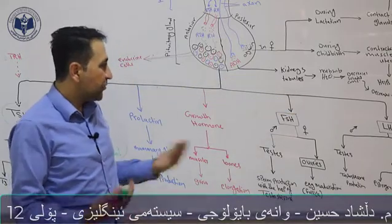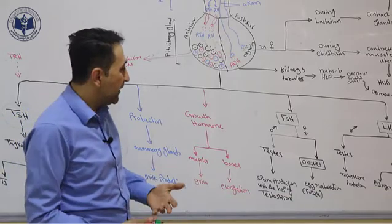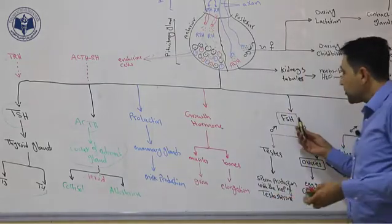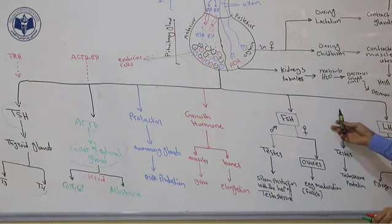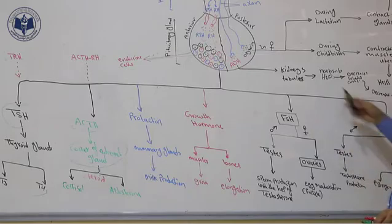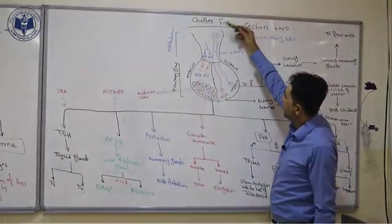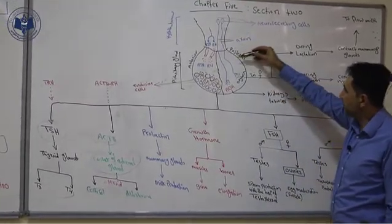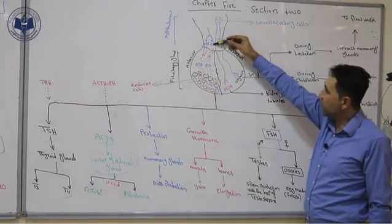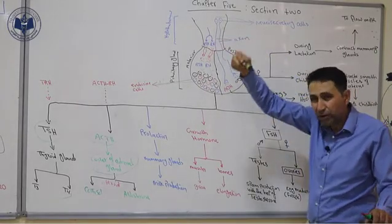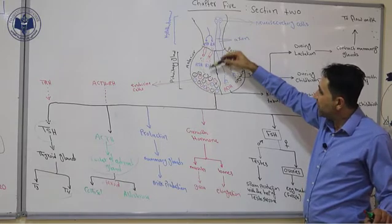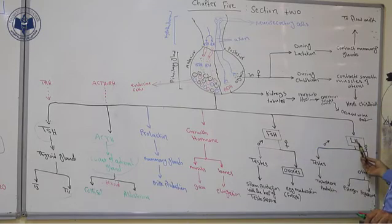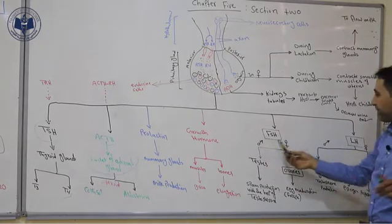The last two hormones produced by the anterior lobe are FSH and LH, which will be discussed in more detail in chapter 6 sections 1 and 2. These hormones are produced by both males and females when they reach puberty. The hypothalamus produces a releasing hormone called GnRH, which is not mentioned in the book, and GnRH stimulates the anterior lobe to produce LH and FSH.